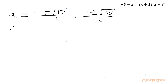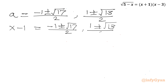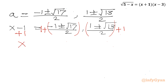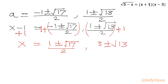Now since a was the substitution x minus 1 equals a, we have x equals a plus 1. Adding 1 to all solutions: x equals (1 plus or minus square root 17) divided by 2, and x equals (3 plus or minus square root 13) divided by 2.